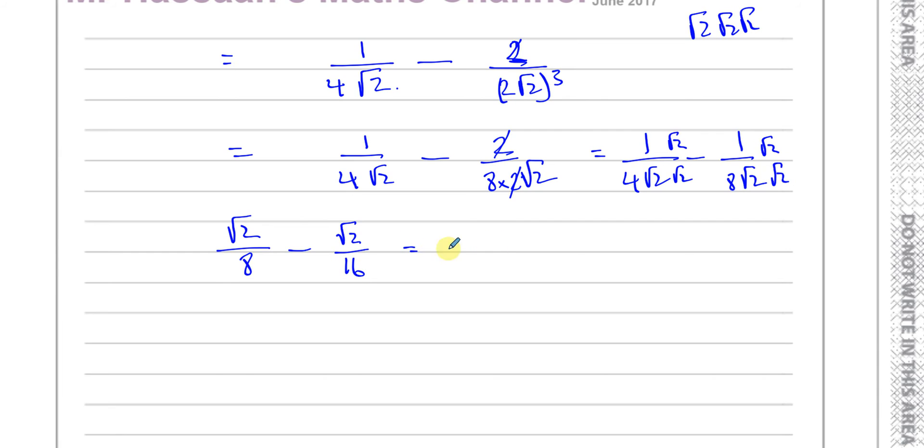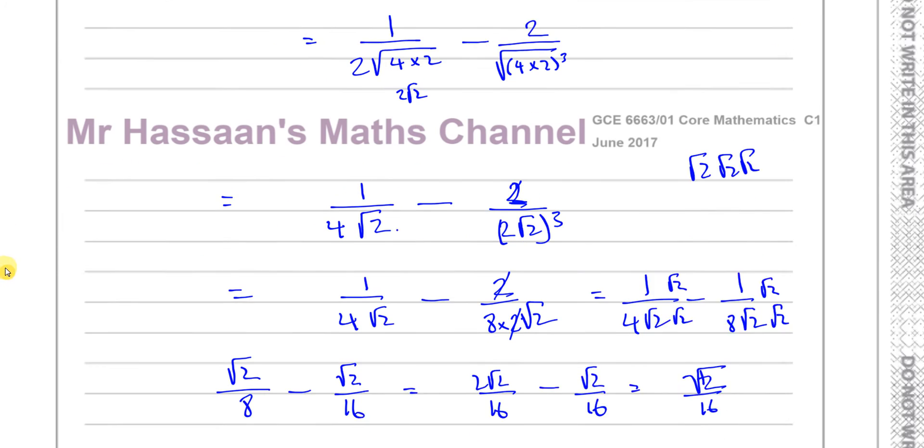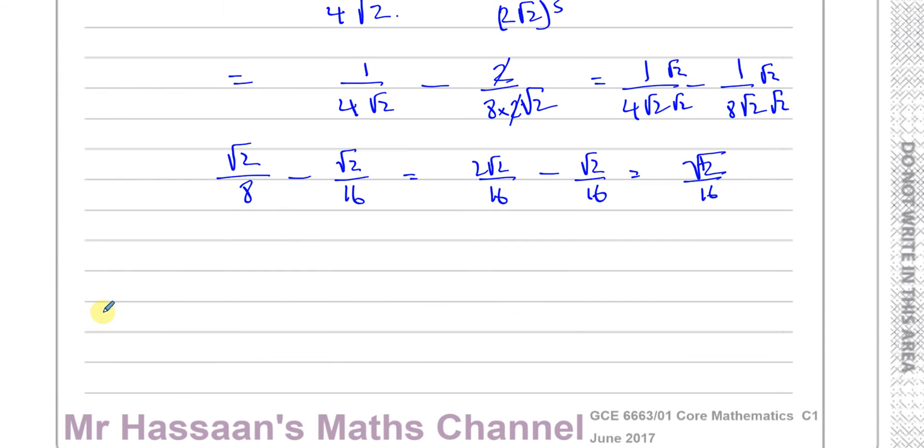And then I can add these two fractions together. This is like, make the denominator 16, so it will be 2 root 2 over 16, minus root 2 over 16. So 2 root 2 minus 1 root 2 is 1 root 2, so I'll end up with root 2 over 16. So in this form that they want it, a root 2, I can say this is like 1 over 16 times root 2. So we can say a equals 1 over 16.